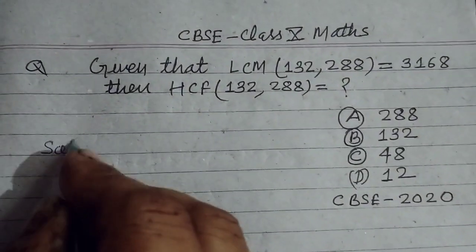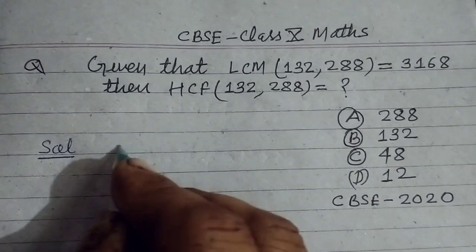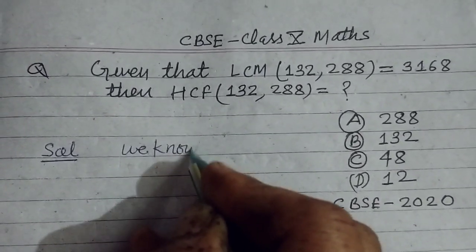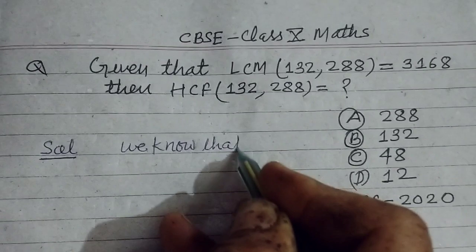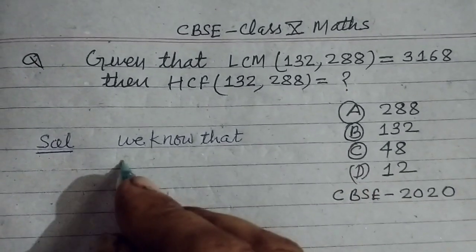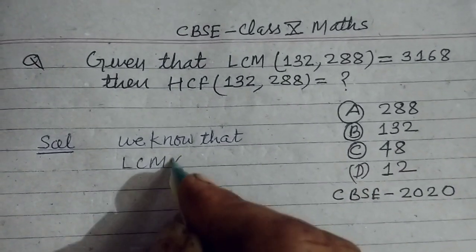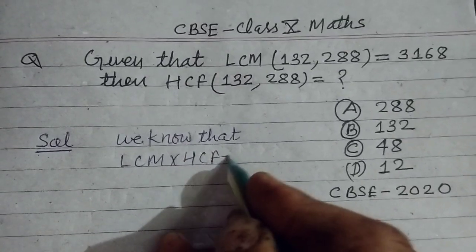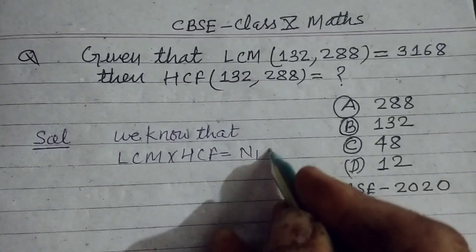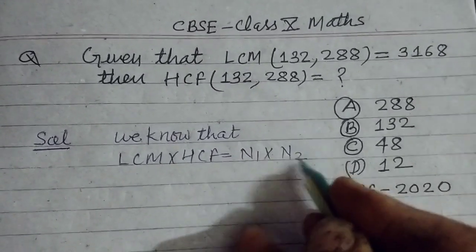So students, we know the formula. We know that for two numbers, LCM times HCF equals number first times number second.